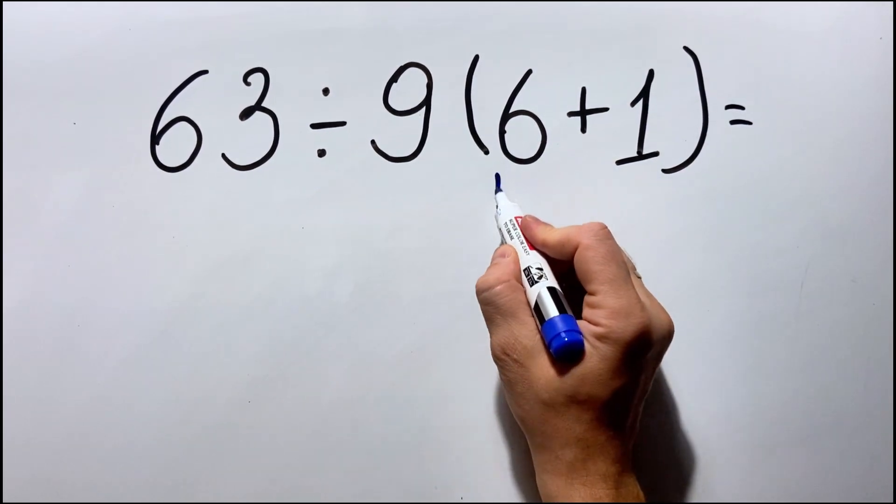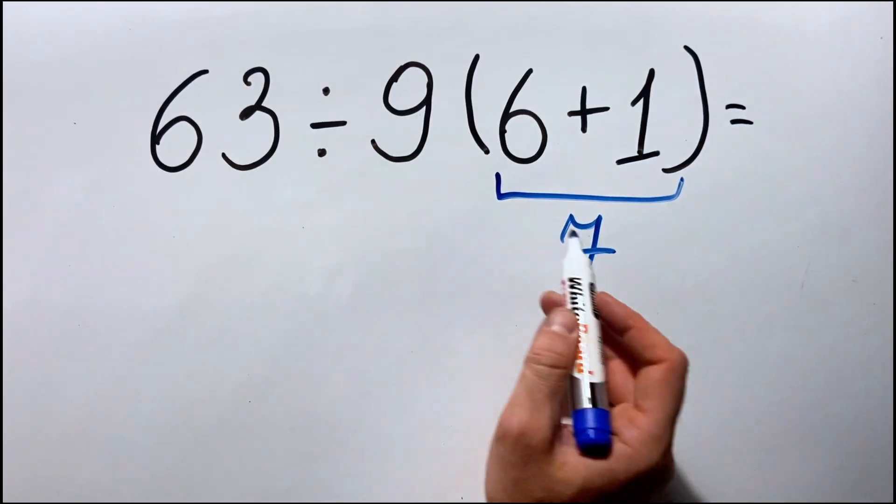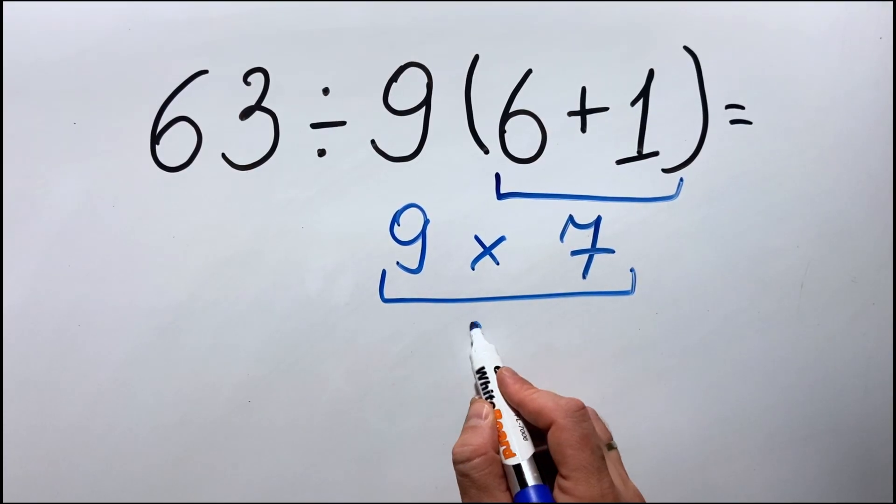6 plus 2 equals 7. 9 multiply by 7 equals to 63.